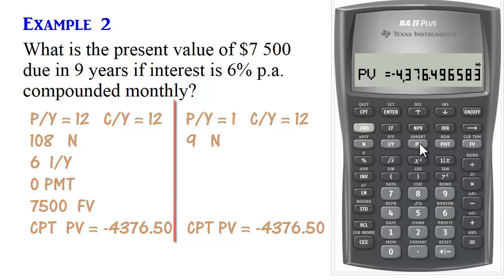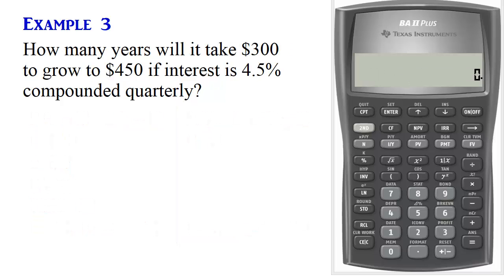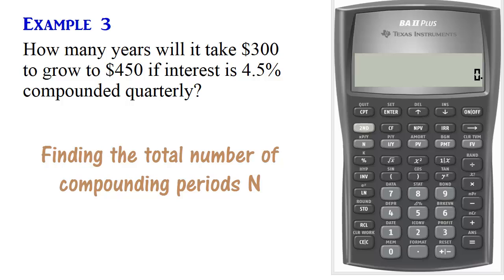Let's look at one more example. Example 3. How many years will it take $300 to grow to $450 if interest is 4.5% compounded quarterly? So this time we want to find the number of years, we will be computing N.